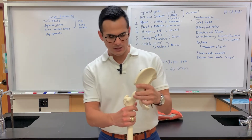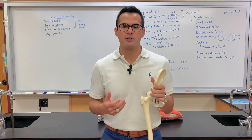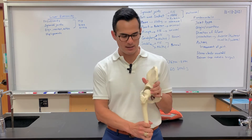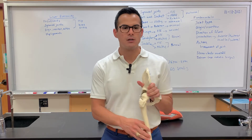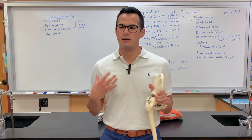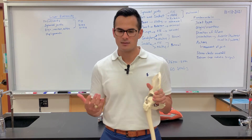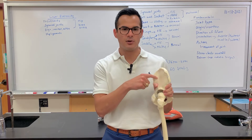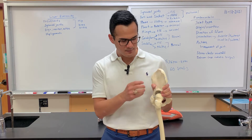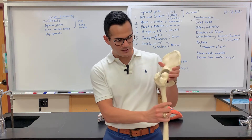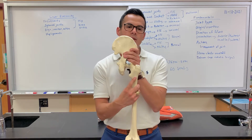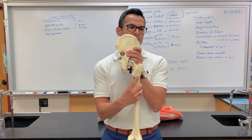The hip extensors bring the hip backwards. The primary hip extensor is the gluteus maximus, found on the posterior iliac fossa, and it inserts at the gluteal tuberosity on the back side of the femur.